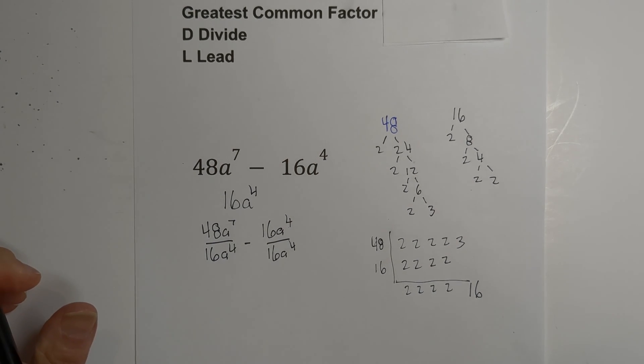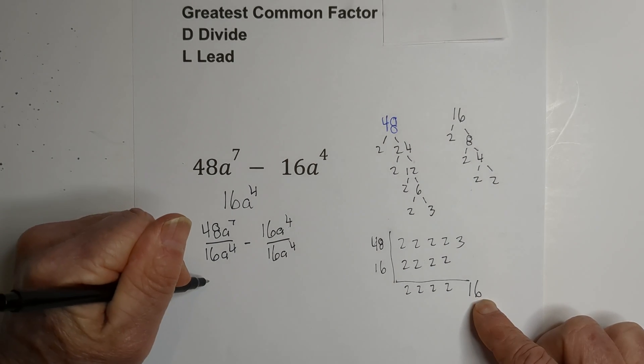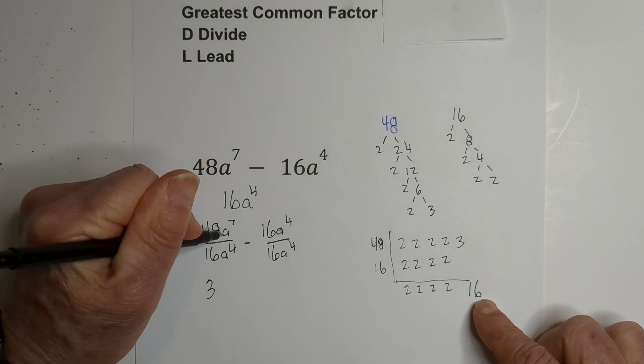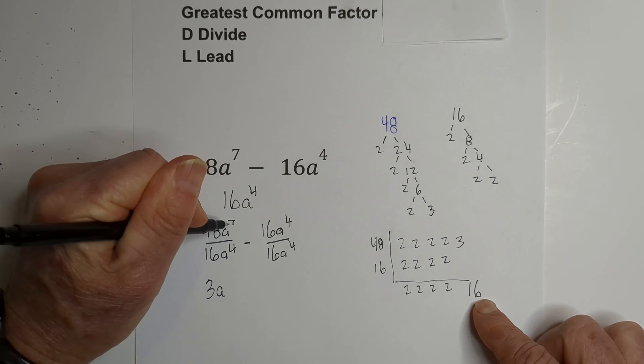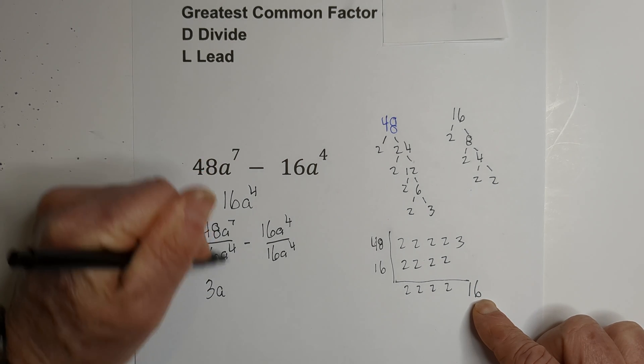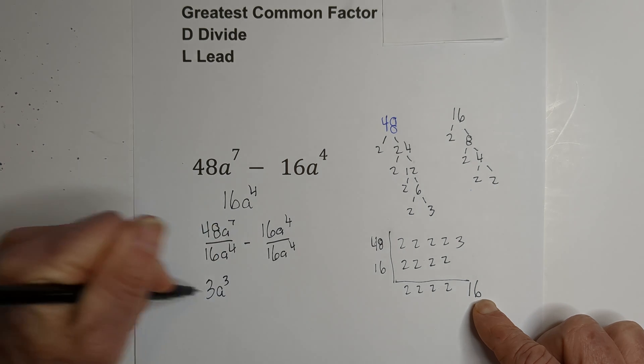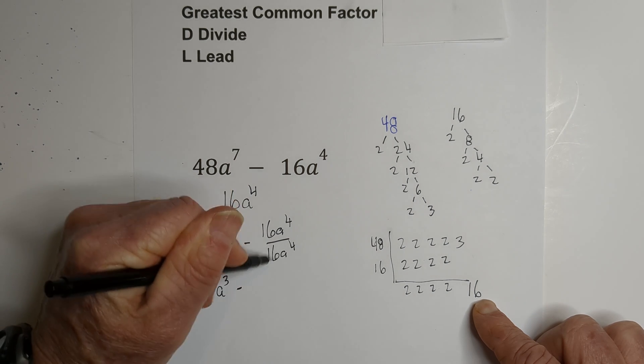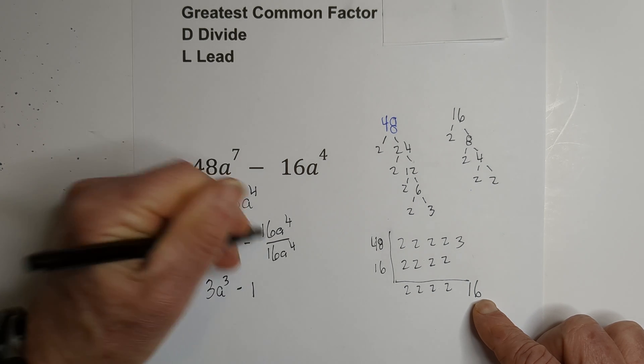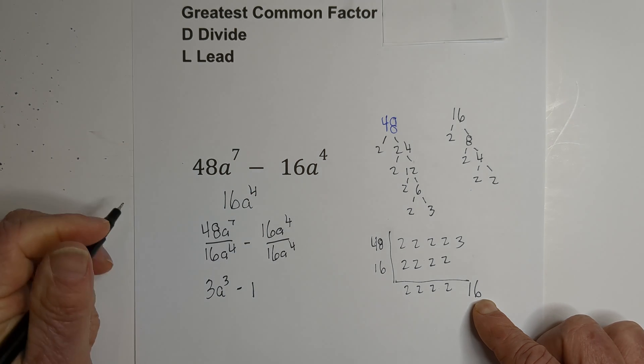16 goes into 48 three times. Bring down the a, and that will be seven minus four, which is a^3. Then 16 divided by 16 is one, and these cancel.